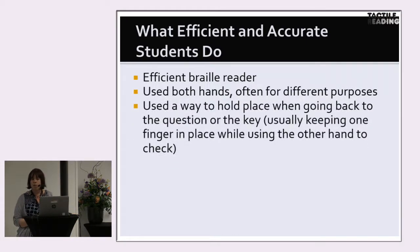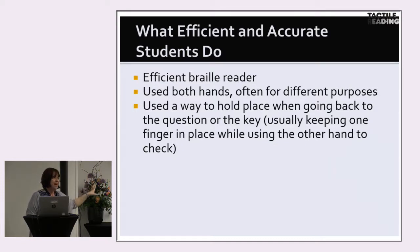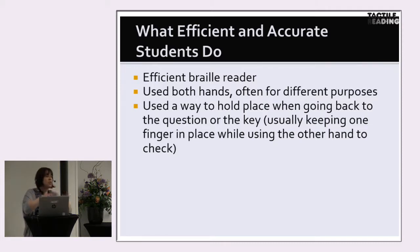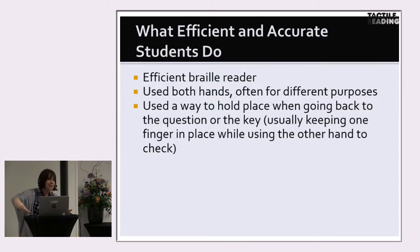Efficient students also had a way to hold their place when going back to the question or key. With that complex two-page map key, less effective students would find something, wonder what a symbol was, take both hands off, go to the key, read down it, and then have to find their spot all over again. Whereas more efficient students kept their place, slid one hand underneath the paper, looked up the key entry they needed, and kept going.